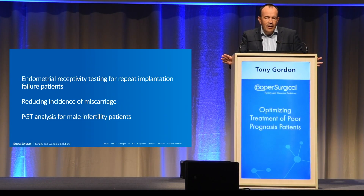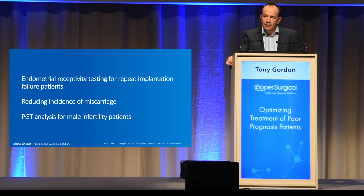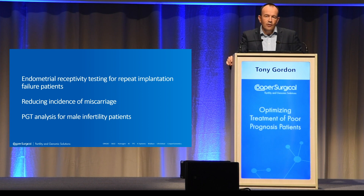I'm going to briefly talk to you about three areas where genetics is having an impact on poor prognosis patients: endometrial receptivity, really for repeat implantation failure patients; some data just coming out looking at pre-implantation testing for aneuploidy, PGT-A, and how that's impacting miscarriage rates; and some future-looking data from a new test we developed, and new data from other groups looking at PGT analysis and how that is potentially going to inform us on male infertility patients.